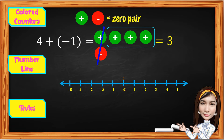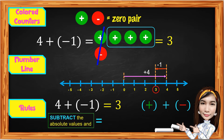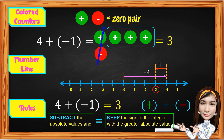Using the number line, start at 0. Move 4 units to the right for positive 4. From that point, move back 1 unit to the left for negative 1. It ends at positive 3. Thus, 4 plus negative 1 equals positive 3. The rule for unlike signs: subtract the absolute values — 4 minus 1 gives 3 — then keep the sign of the integer with the greater absolute value. Positive 4 is greater than negative 1, so the answer is positive 3.